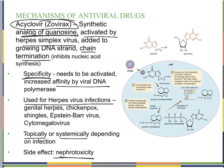The diagram shows the activation process: first, viral enzymes add a phosphate group to acyclovir; then human enzymes add two more phosphate groups producing acyclovir triphosphate. During viral DNA replication, acyclovir triphosphate is added to the growing strand instead of GTP, stopping elongation and halting viral replication.